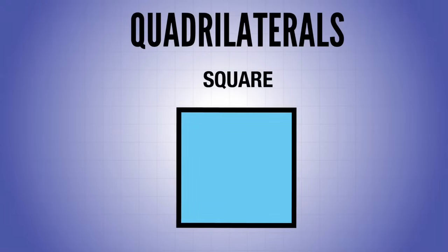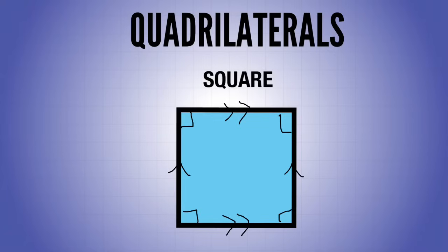A square is a special rectangle. It has the four right angles and the two pairs of parallel lines, but it also has all sides congruent — all equal. That's where a square really sets itself apart as a special quadrilateral. It can also sometimes be called a rhombus, which we'll talk about in a little bit.